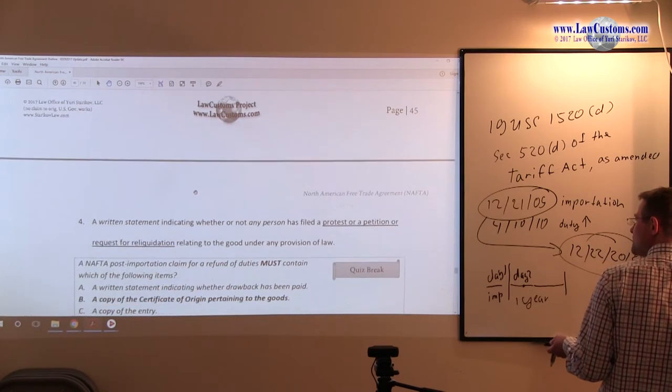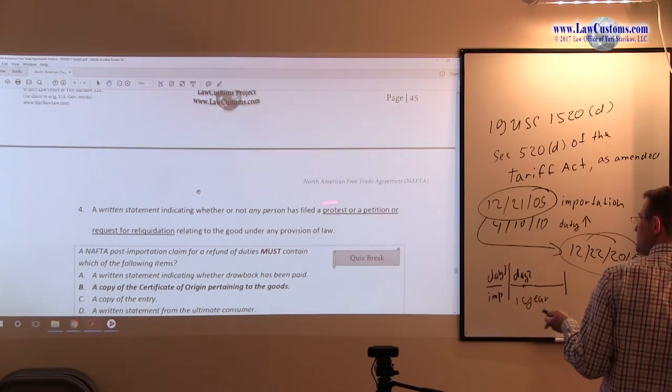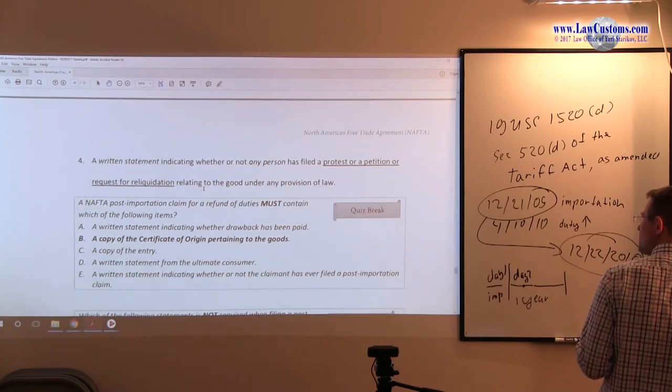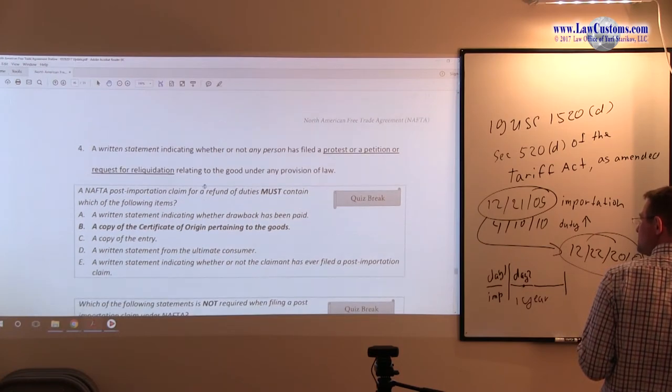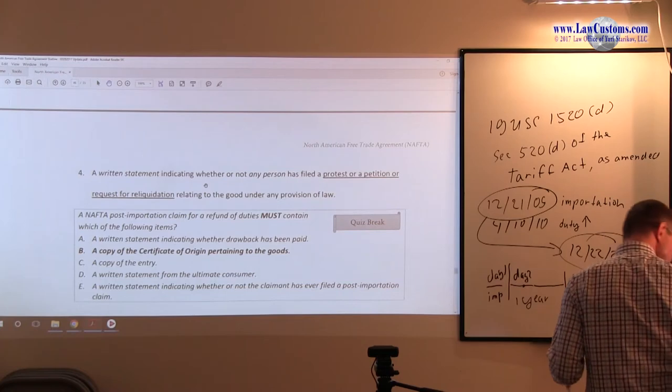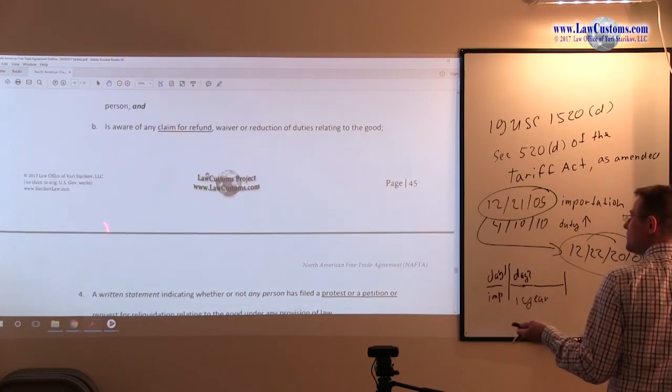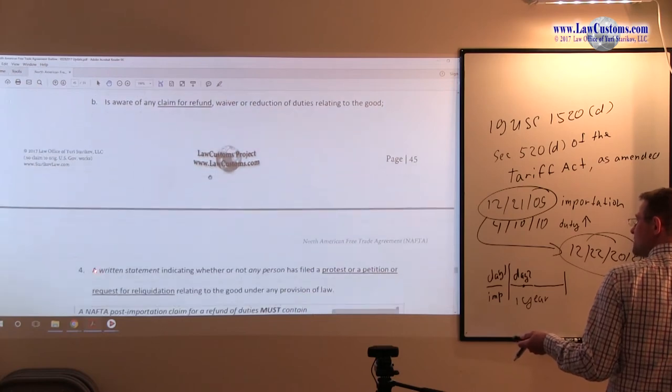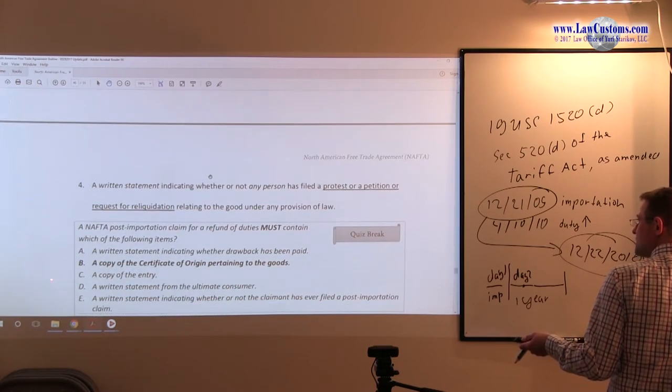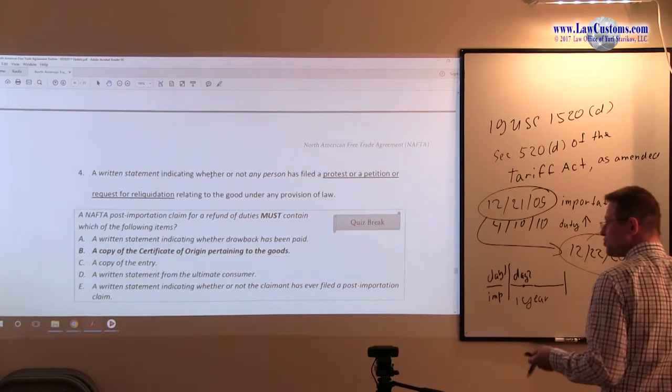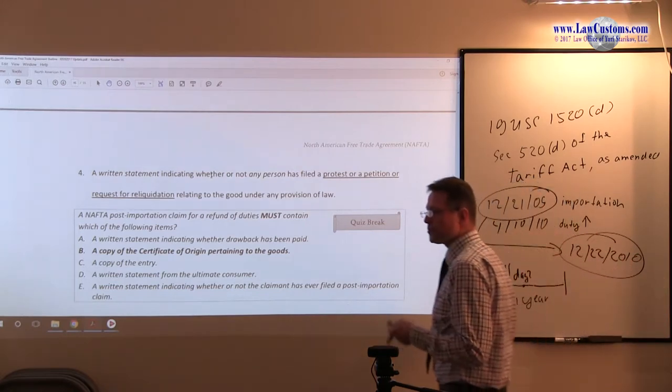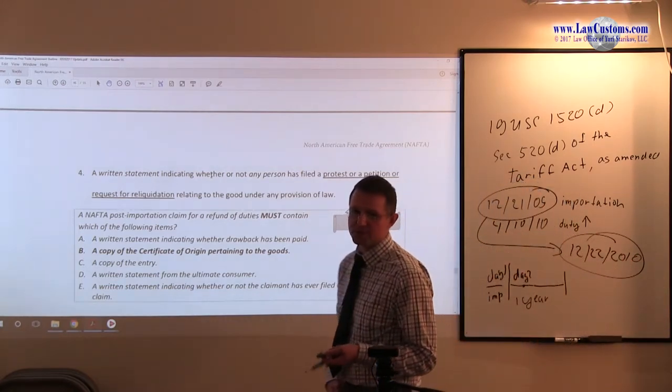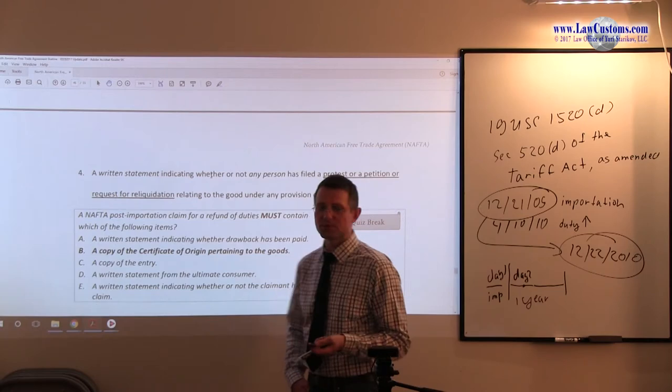The fourth section is a written statement whether the protest or request for the graduation has been filed. So notice, this is a laundry list, one through four, and customs usually test on laundry list by providing you a question which is not. So all of the stuff will be included in the laundry list, but with that one particular question.